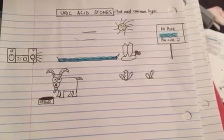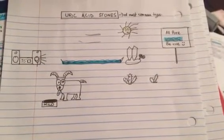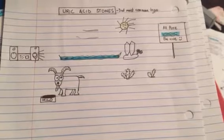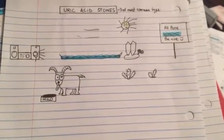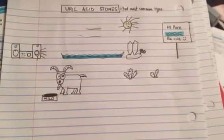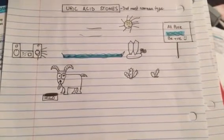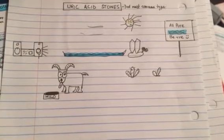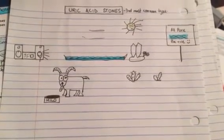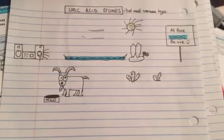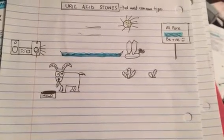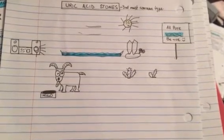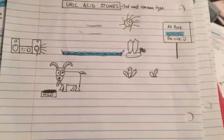Uric acid stones are normally not seen on x-rays or CT, and are mostly visualized by ultrasound. On ultrasound, you will see rhomboid or diamond-shaped crystals — at some places they also describe rosette-shaped crystals. These crystals are also found in gout, myeloproliferative disorders, and leukemia.